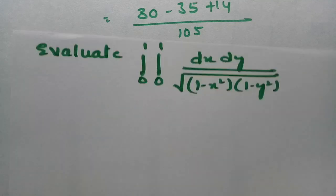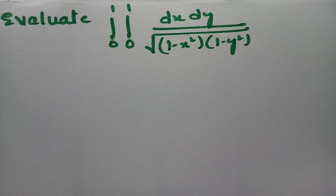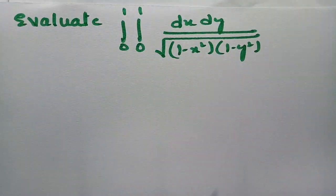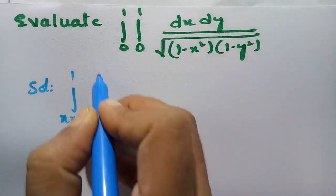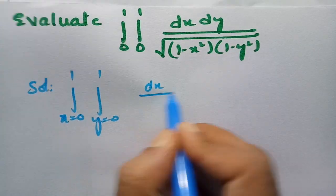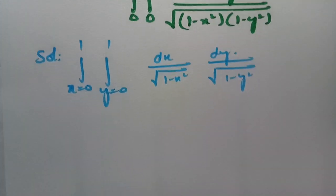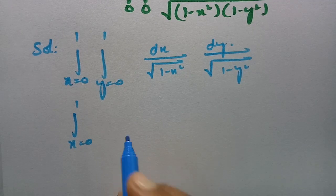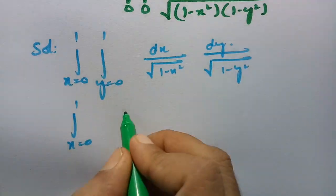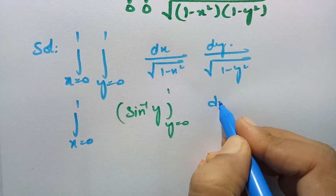The next equation to evaluate is the double integral from 0 to 1 and 0 to 1 of dx dy divided by root over 1 minus x square into 1 minus y square. The solution separates as integral from 0 to 1 of dx by root over 1 minus x square, times the integral from 0 to 1 of dy by root over 1 minus y square. First I integrate with respect to y, and the integral of dy by root over 1 minus y square is sine inverse of y, evaluated between y equals 0 to 1.